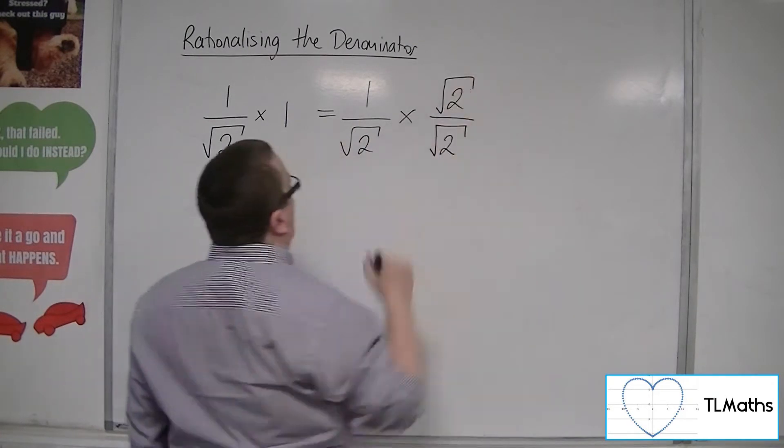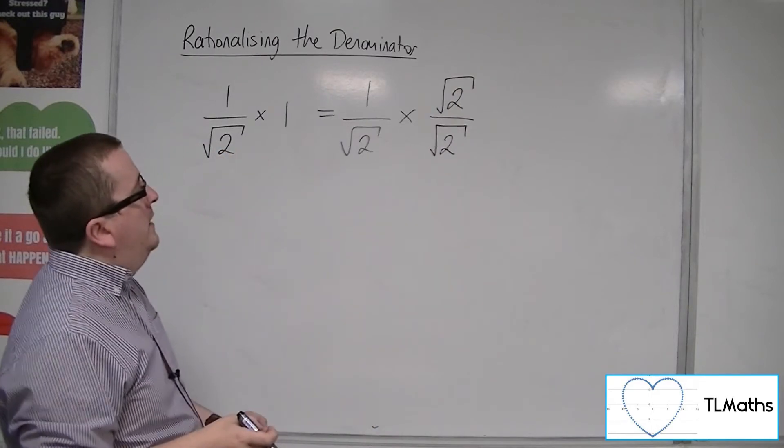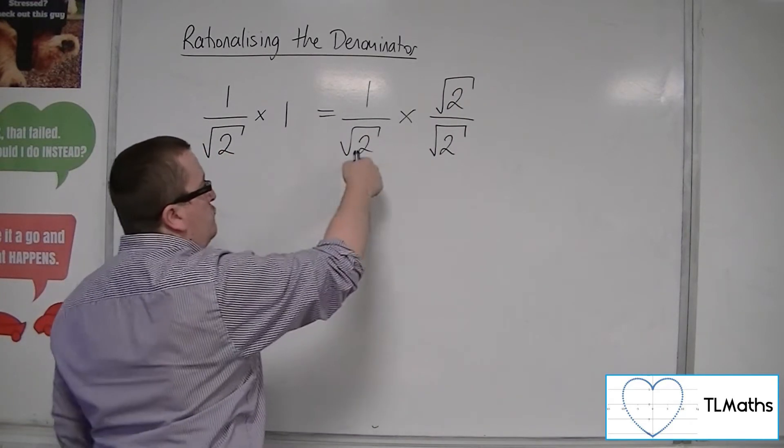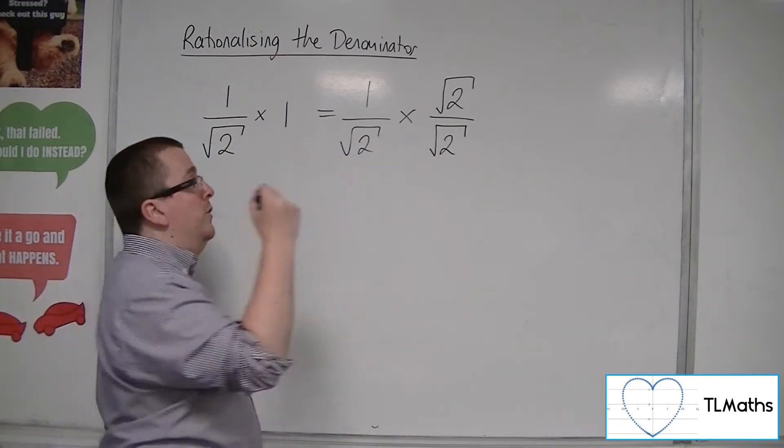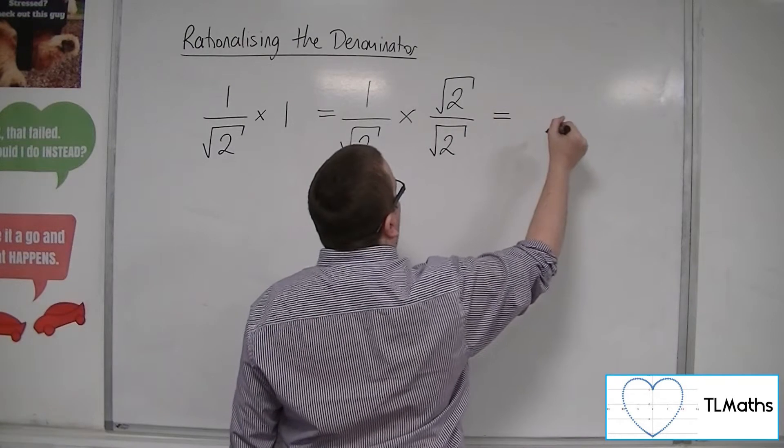and the reason why I would choose that is to enable this multiplication of root 2 and root 2 in the denominator, because I know that root 2 times root 2 is just 2.